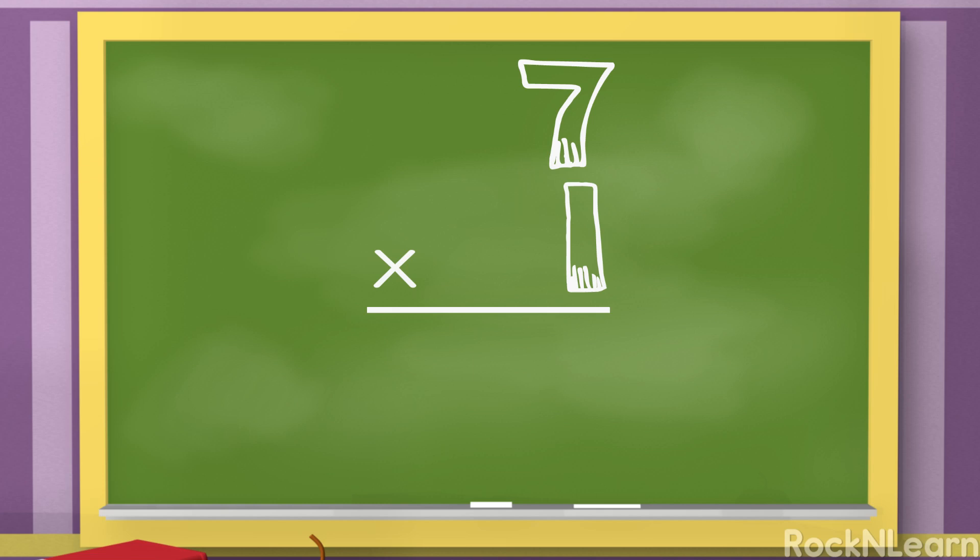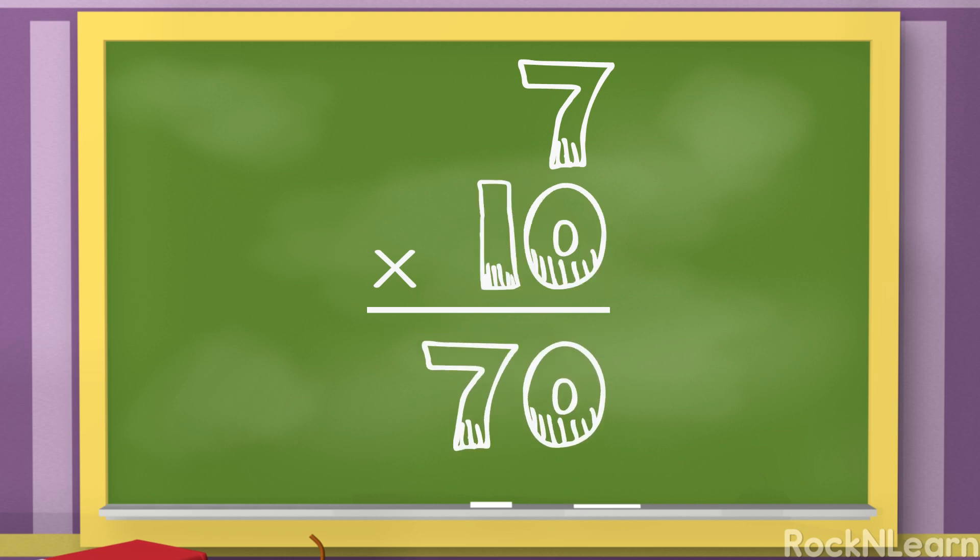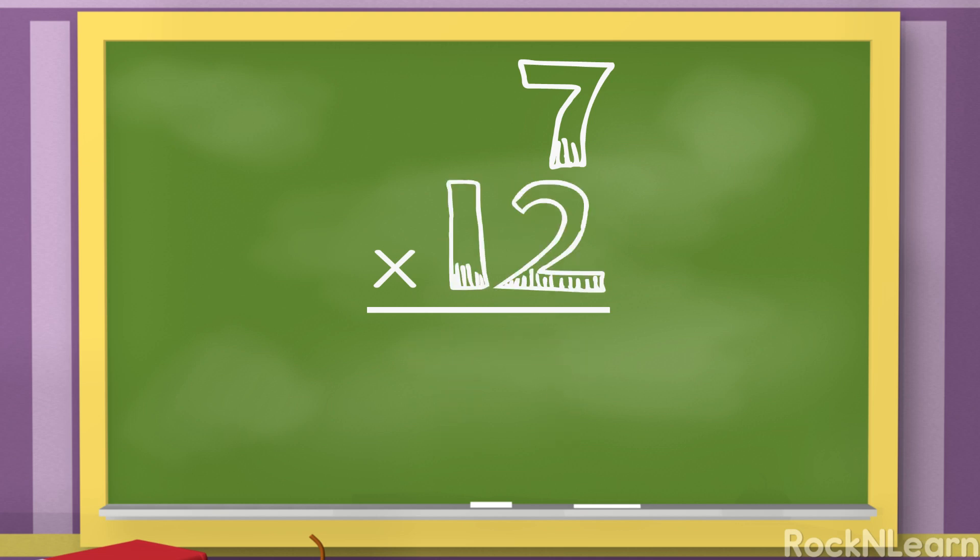Seven times one is seven. Seven times two is fourteen. Seven times three is twenty-one. Seven times four is twenty-eight. Seven times five is thirty-five. Seven times six is forty-two. Seven times seven is forty-nine. Seven times eight is fifty-six. Seven times nine is sixty-three. Seven times ten is seventy. Seven times eleven is seventy-seven. Seven times twelve is eighty-four.